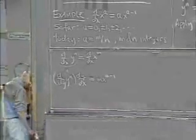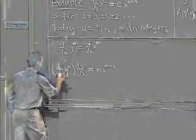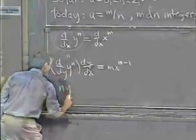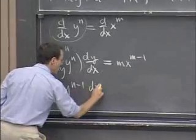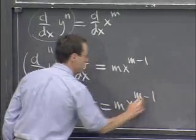And so this is the same as, I'll write it underneath here, n y to the n minus 1 dy dx is equal to m x to the m minus 1.